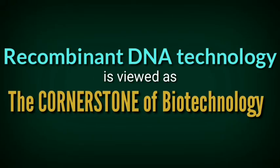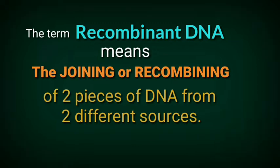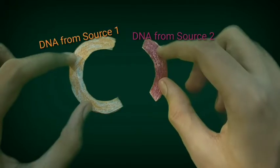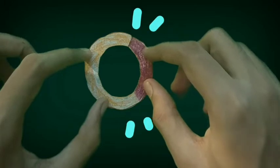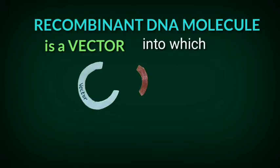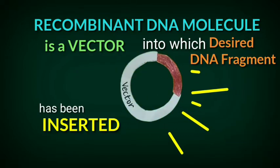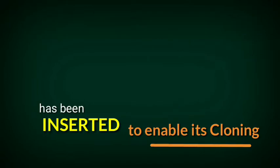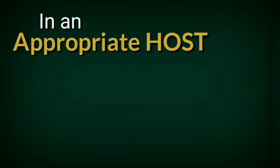Recombinant DNA technology is viewed as the cornerstone of biotechnology. The term recombinant DNA means the joining or recombining of two pieces of DNA from two different sources. So here we are taking DNA from source 1 and DNA from source 2 and joining it — this is the recombinant DNA molecule. A recombinant DNA molecule is a vector into which a desired DNA fragment has been inserted to enable its cloning in an appropriate host.